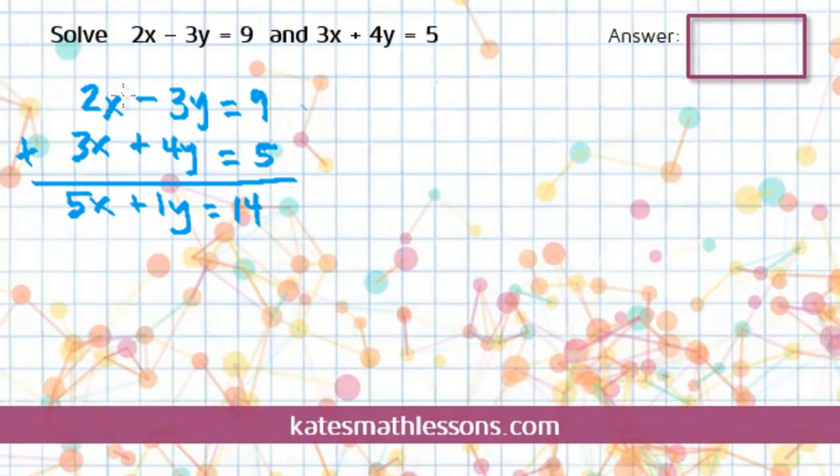So if I add it just as it is, nothing cancels out. I didn't eliminate the x or the y, and this is a problem. So if this happens to you when you're using elimination, you need to go back and see if you can try to fix the problem. So I'm going to erase some of what I wrote just now.